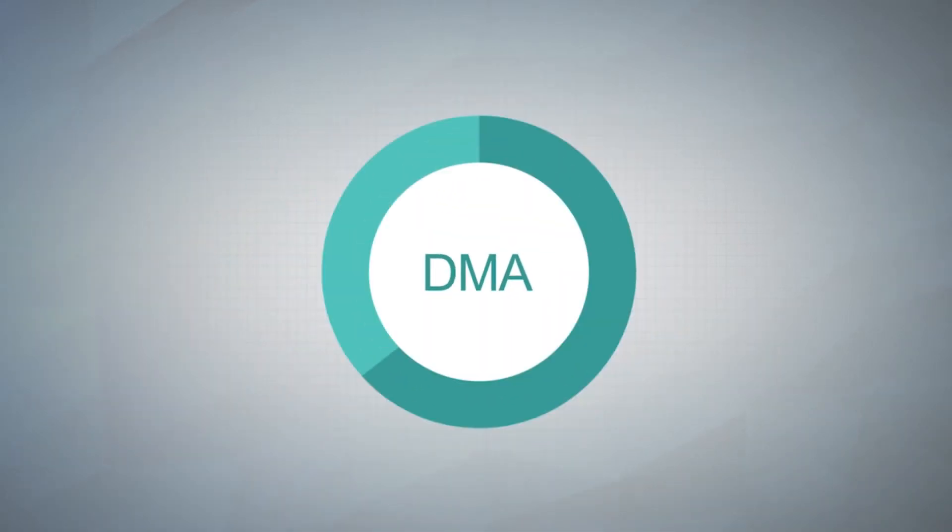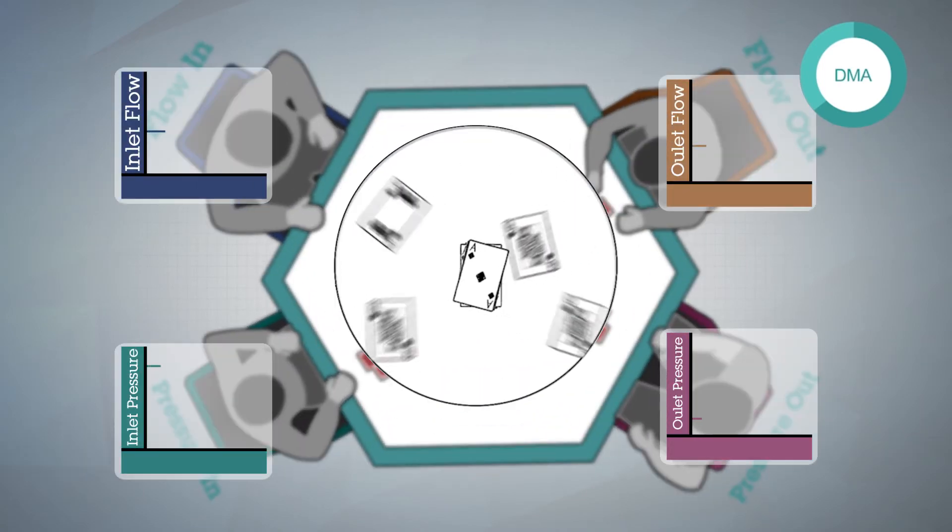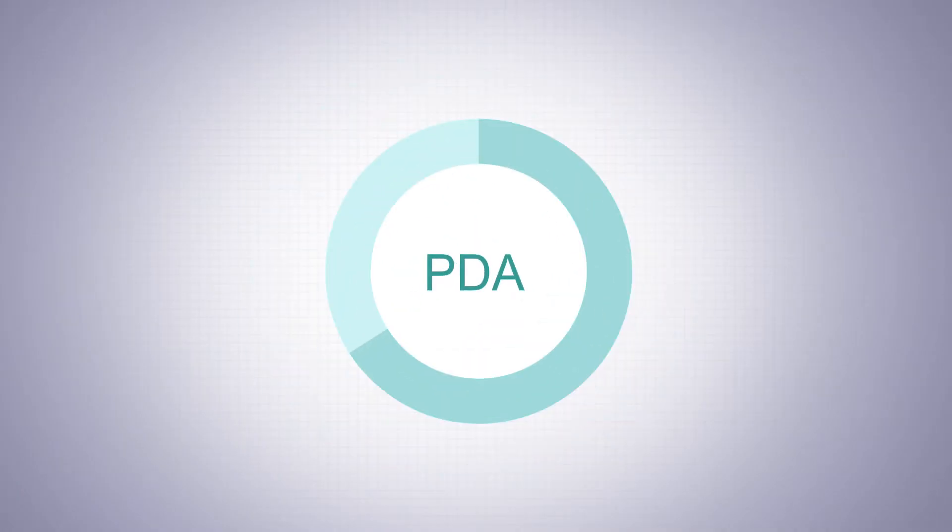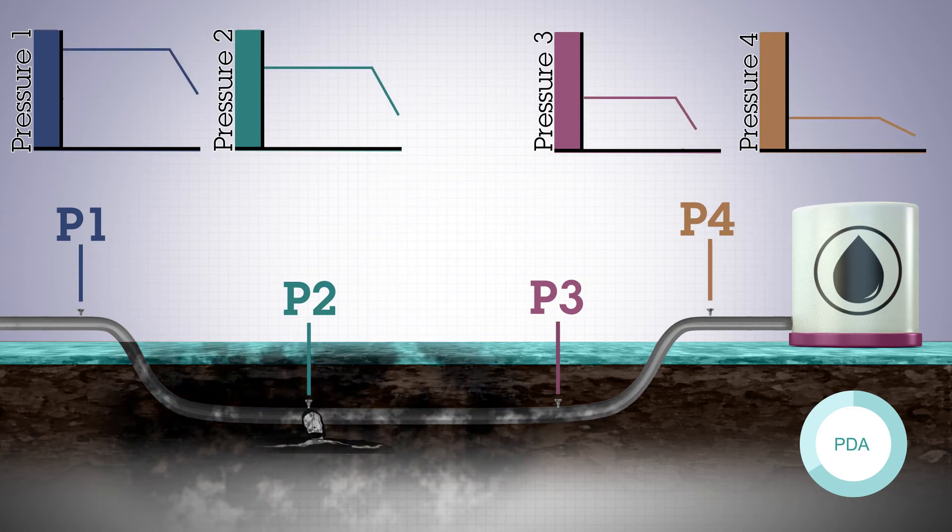The DMA algorithm monitors flows, pressures, and other signals along the pipeline for the unique combination of signals that only occurs with a rupture. The Pressure Difference Analysis algorithm compares pressures along the pipeline to detect ruptures on all areas of a pipeline.